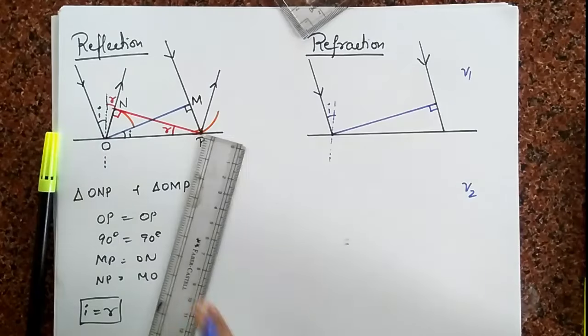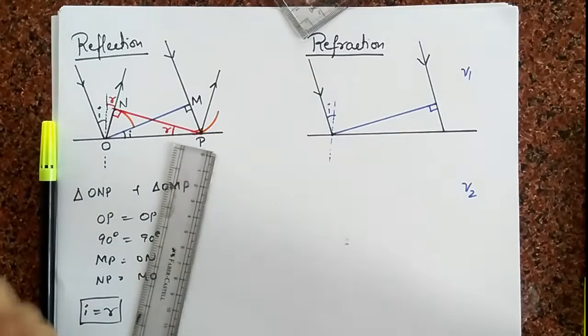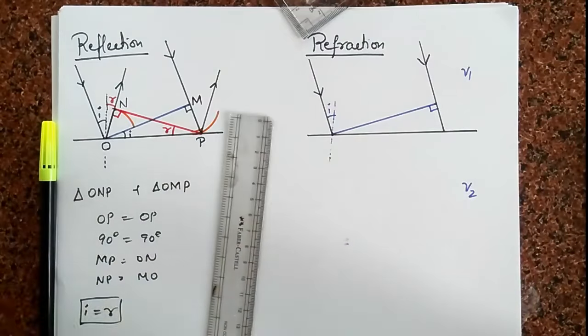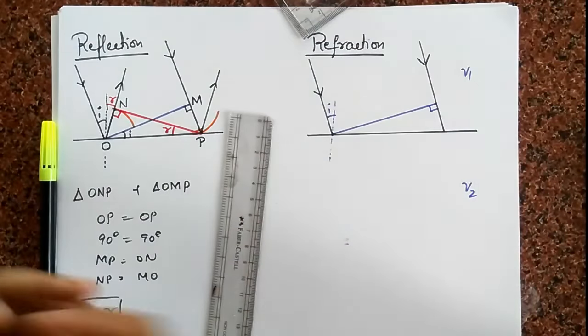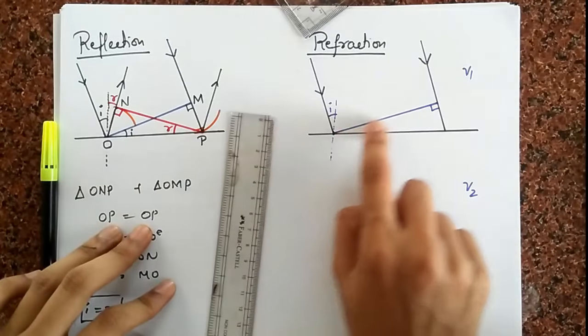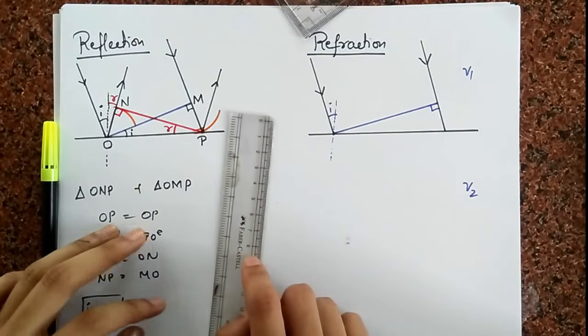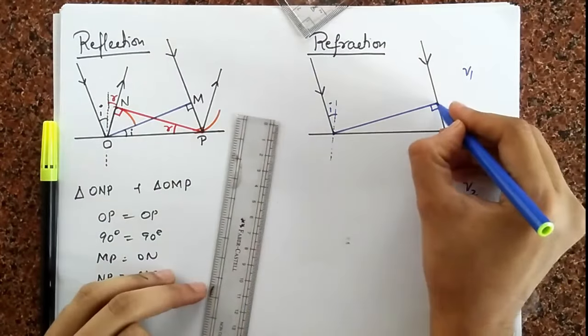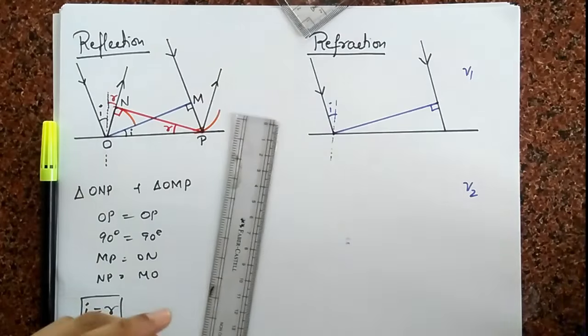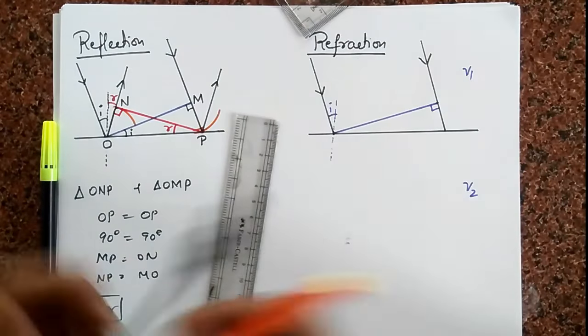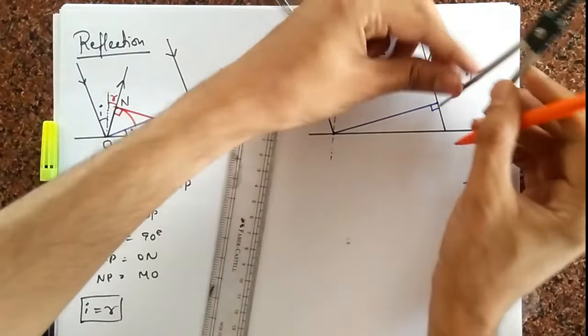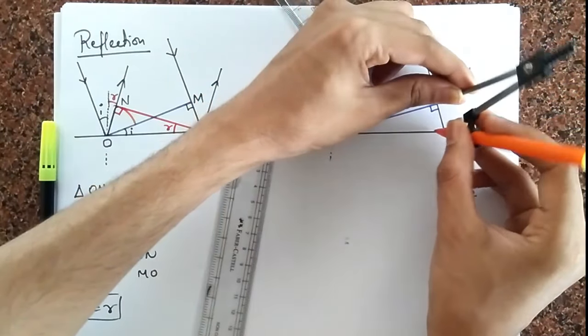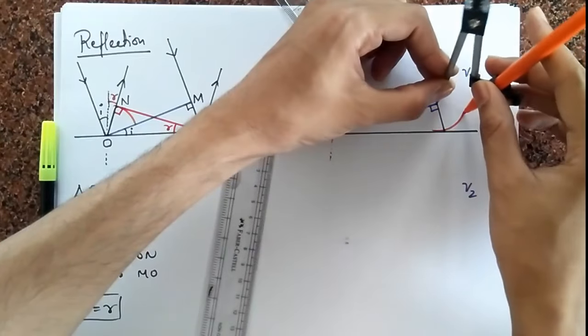So Huygen is also saying that refraction takes place due to changes in velocity, just like Newton. Maybe both of them agree with each other. So what's going to happen next? I have to again consider each point on this wave front as a secondary Huygen source. But I'm going to choose this one, a secondary Huygen source, and I'm going to draw a wave front. Again, the radius which I'm going to choose, I'm going to cleverly choose the radius such that it hits over here. So that's my radius.